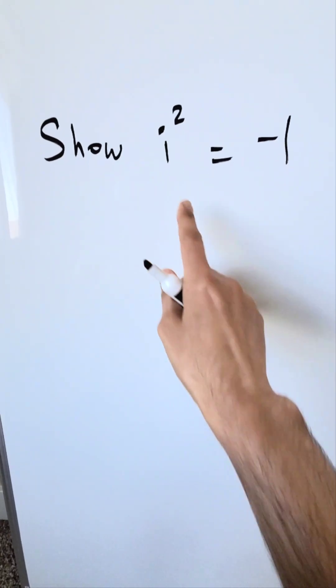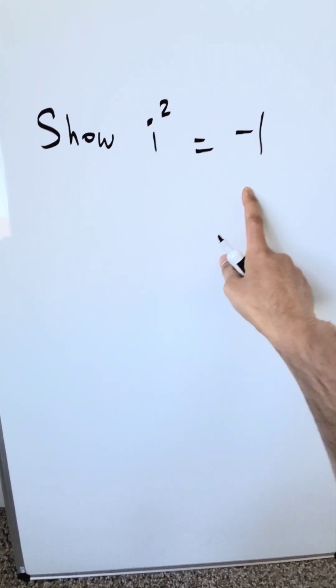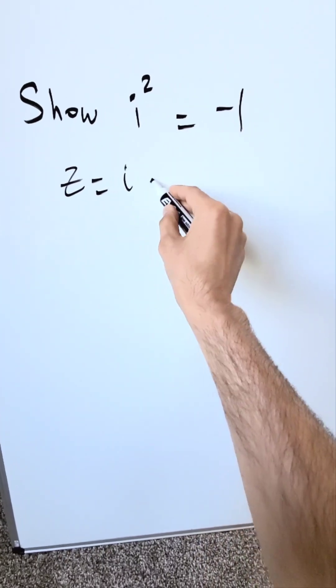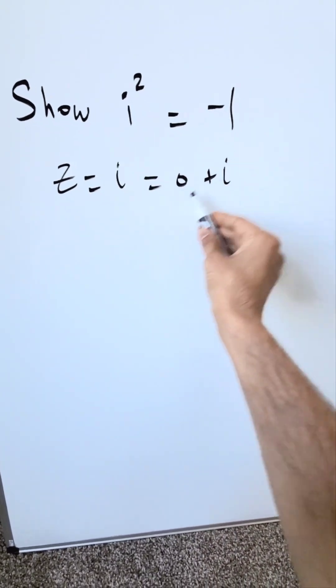Look over here. We want to show i squared is equal to minus 1. How can we do that? Start here with a complex number. That complex number is equal to i, which you can write as 0 plus i.